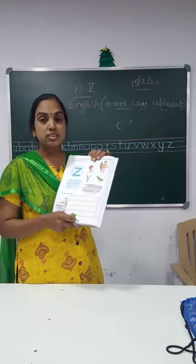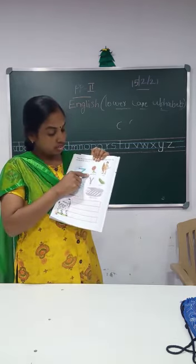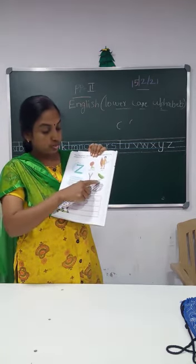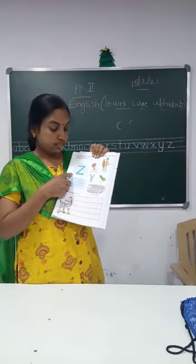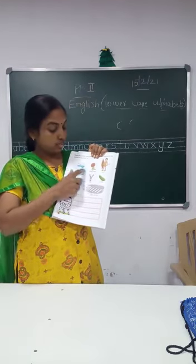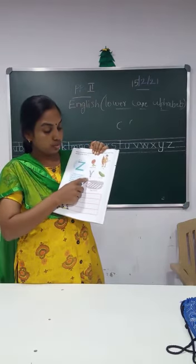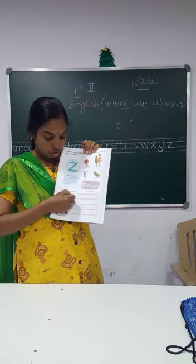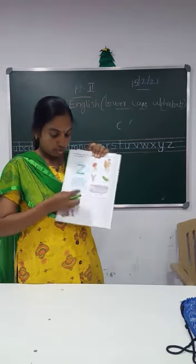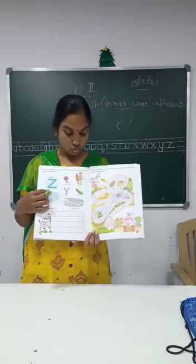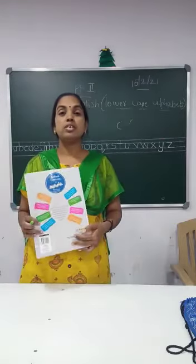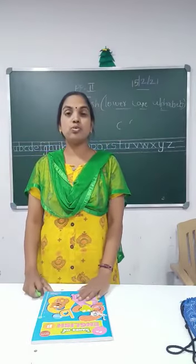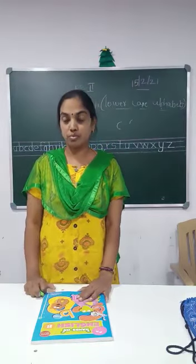Z sounds Z. Zaina flower, zulu, zucchini, zebra — Z sounds Z. This will also be done as homework. The page number will be sent on WhatsApp. Parents, give them good practice of the uppercase alphabet and also the lowercase alphabet to write in a four-line book. Thank you.